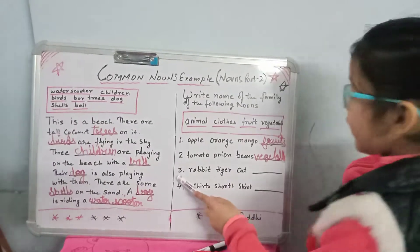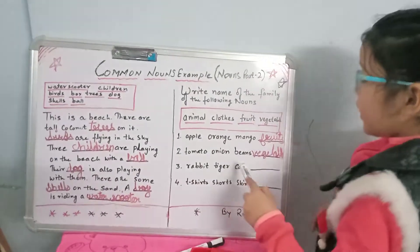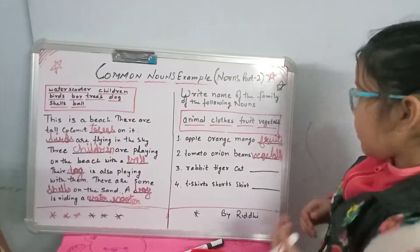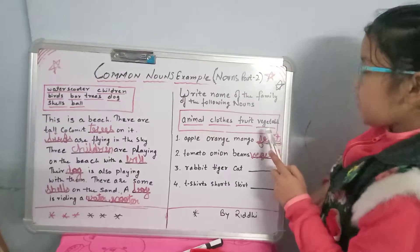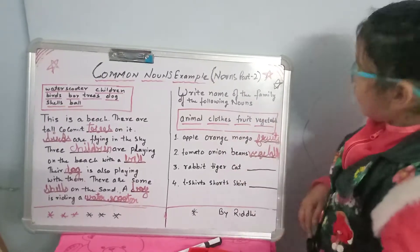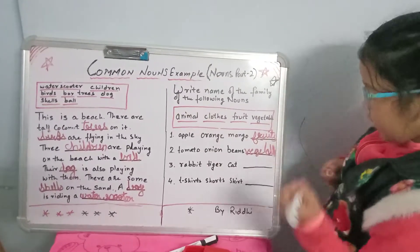The third one is rabbit, tiger, cat. What are these? Are these clothes? No. These are animals.